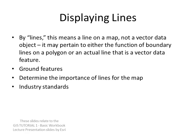The next section deals with displaying lines. By lines, we don't mean a line in the vector world of ArcGIS data — we mean any kind of line on a map that would be recognized as a line by a normal person, not a GIS data object. It may pertain to something we display as a line, like a roadway, or it could be a line used as a boundary around a polygon.